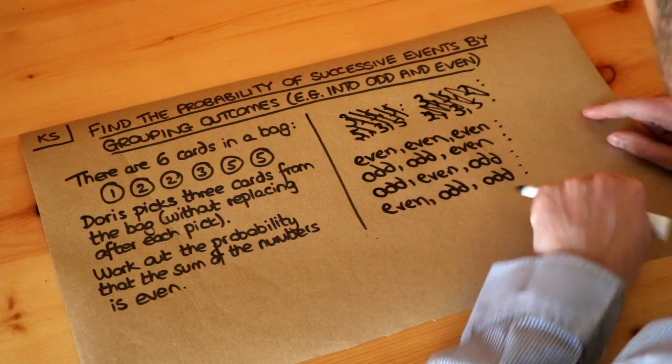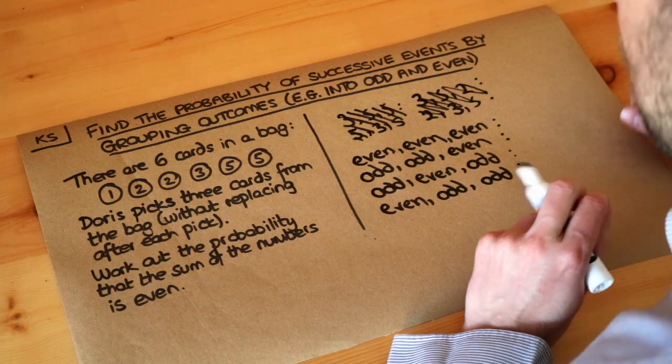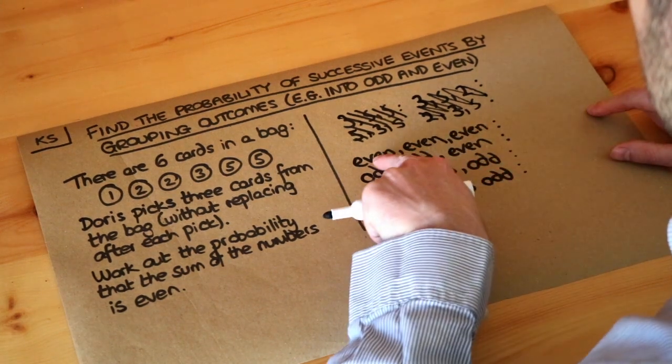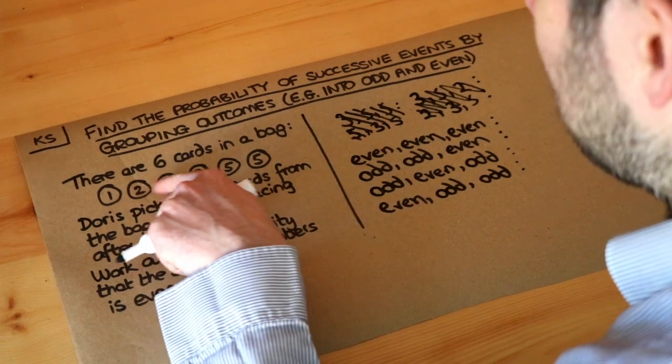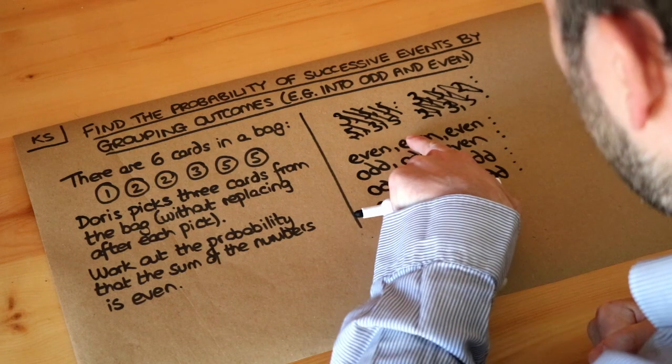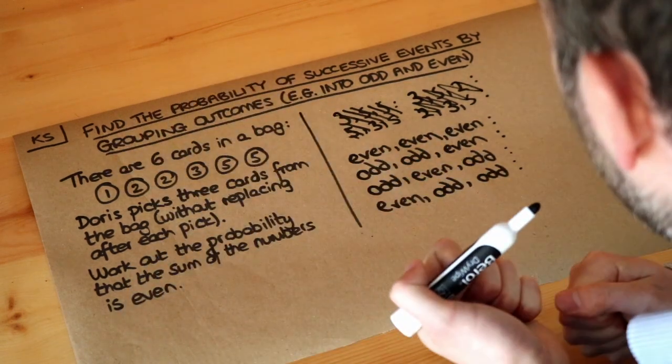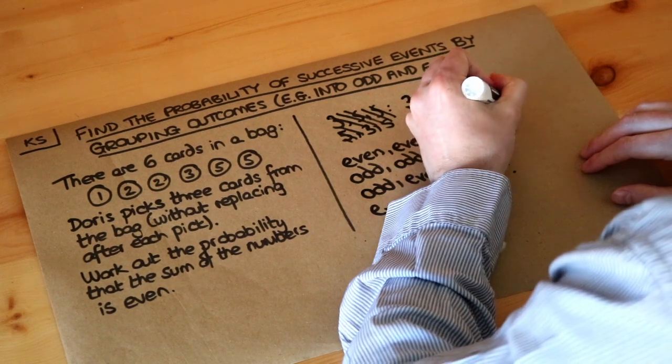Now, we have to find the probability of each of these and then add them together in the usual way. Now, actually, one of these is not possible. To get even, even, even, if we pick an even number, it's only one of these two cards, the twos. So if we pick the two, we've got the two in our hand, and then we pick another even number, so we take the other two. But at that point, there's no even cards left. So there's no possibility of this one.